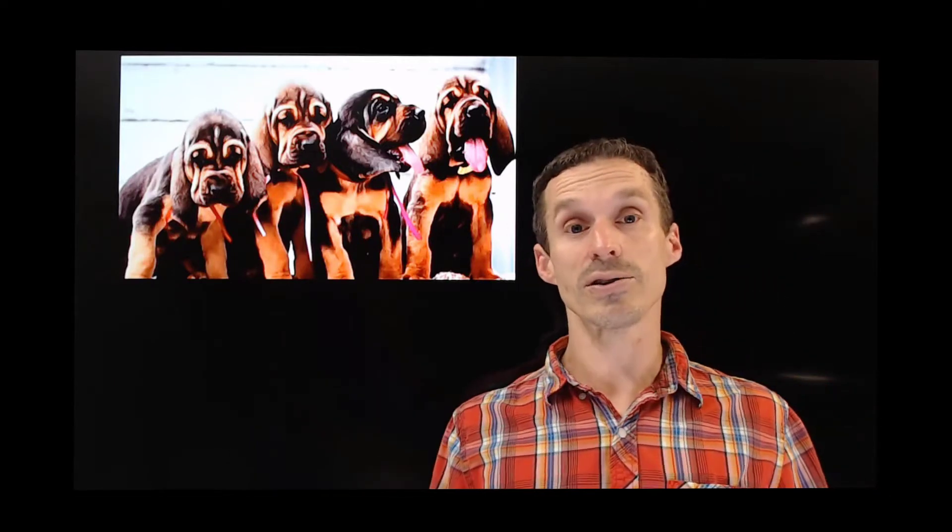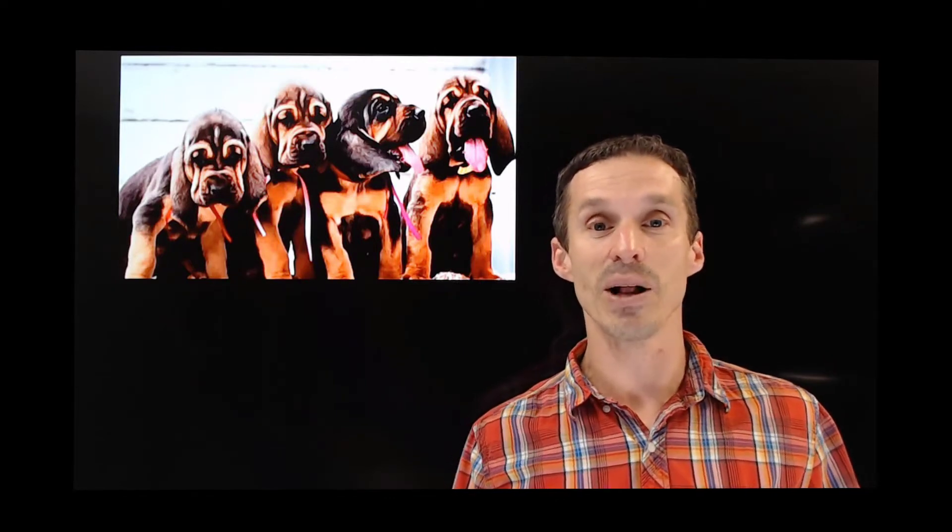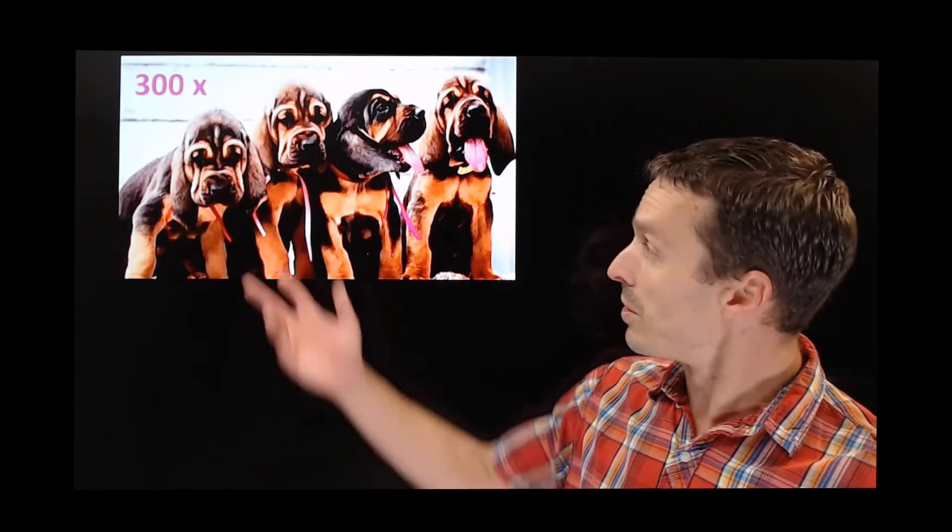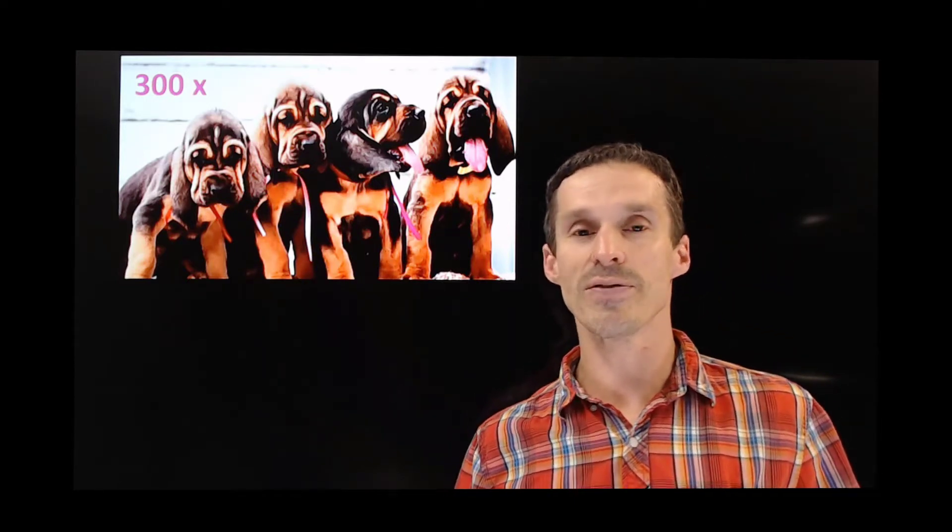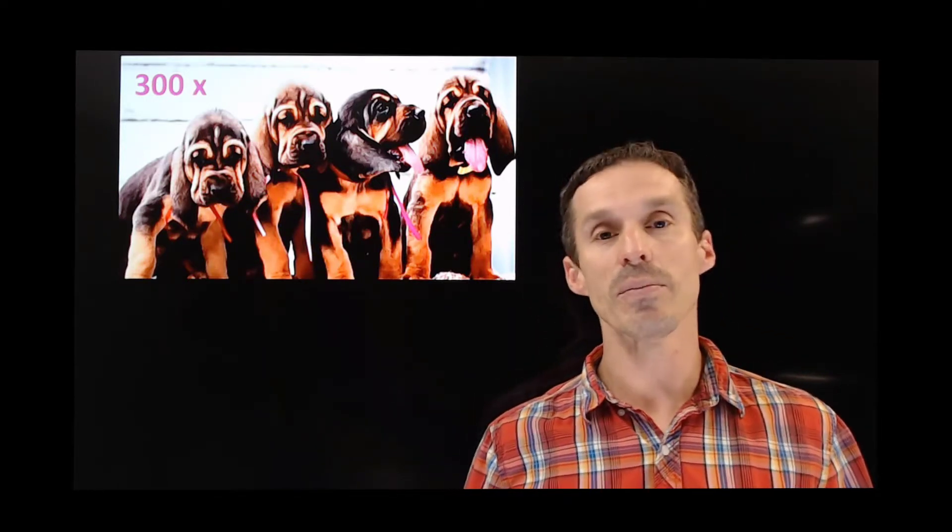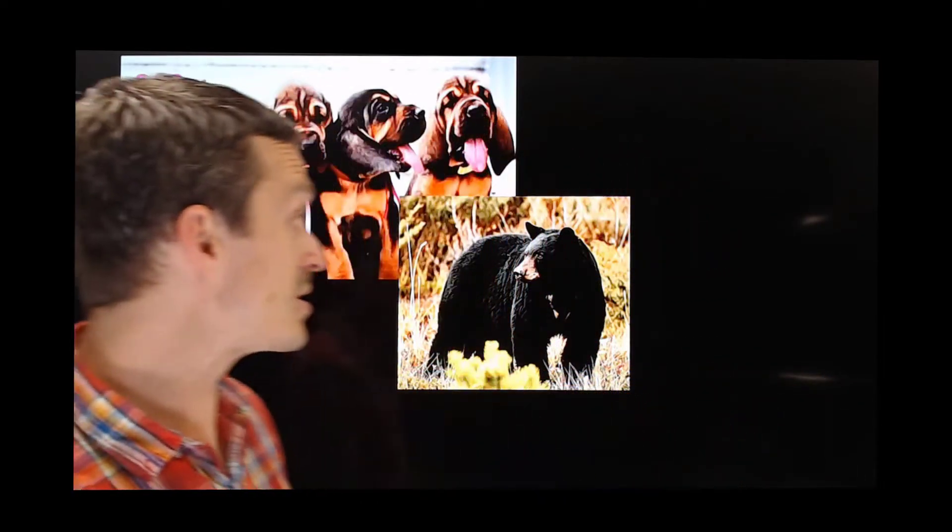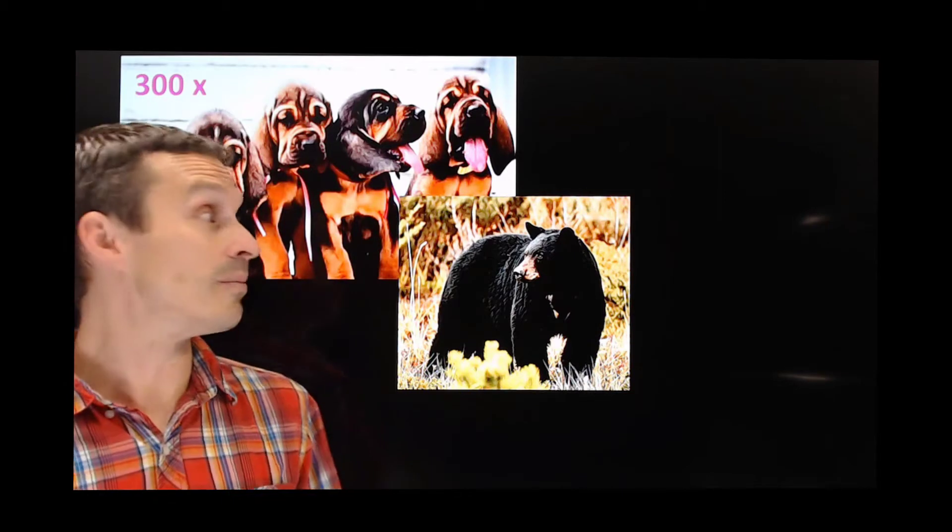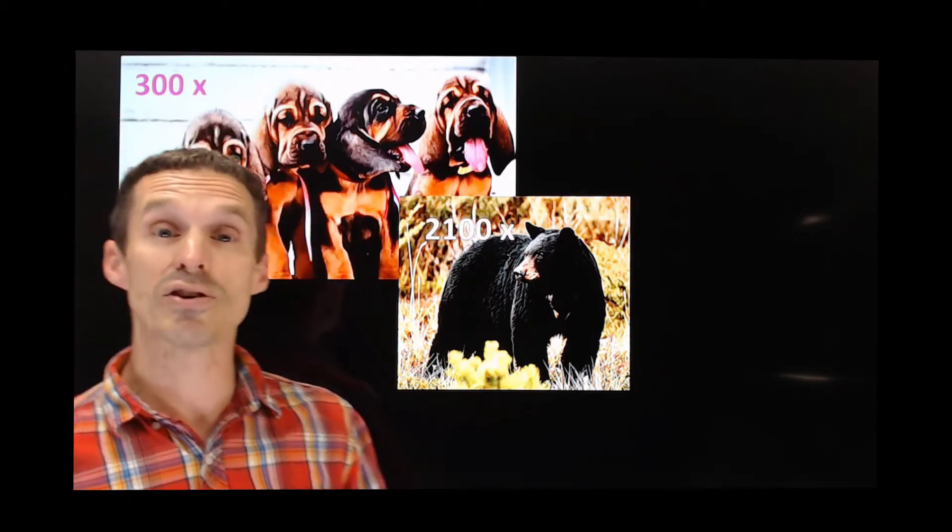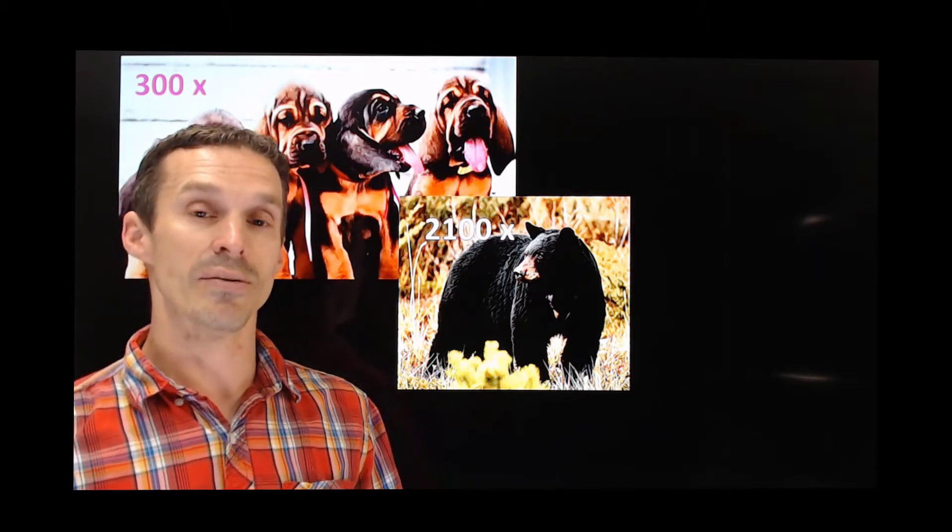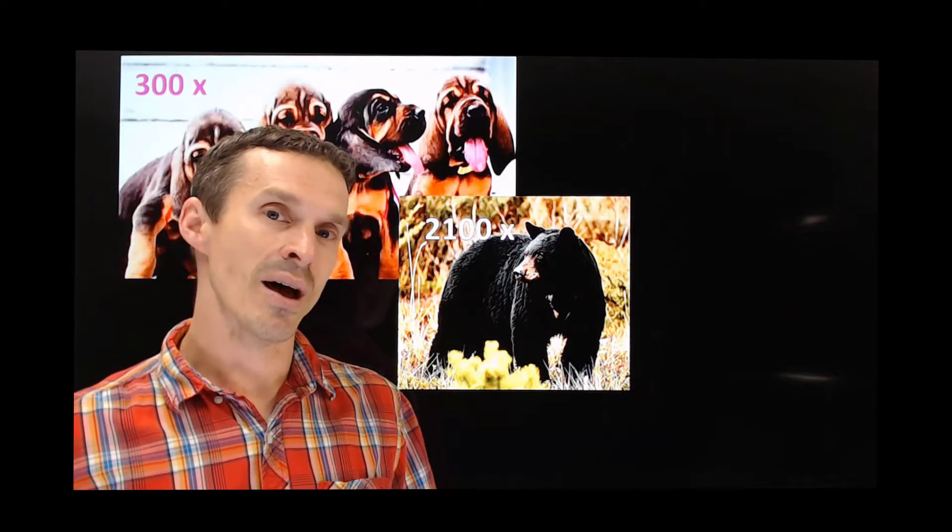Of course we know that dogs have a keener sense of smell than us. They're also able to sense different kinds of molecules. They actually have in their noses 300 times more sensors, different kinds of receptors that are able to distinguish the molecules. Now you think that's good? A black bear actually has an even keener sense of smell. It has over 2,000 times the number of receptors in their nose compared to what we have.